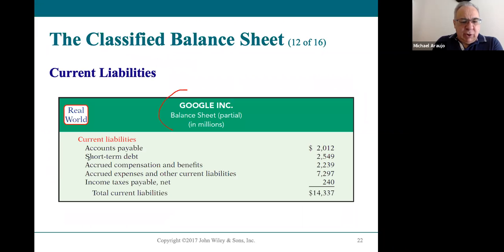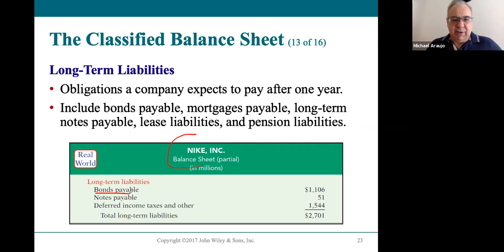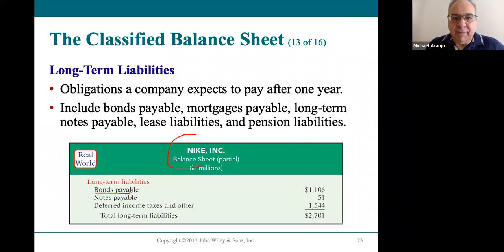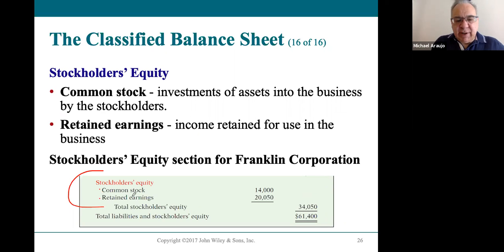The book also shows Google's current liabilities and Nike's long-term liabilities. There's another interesting account called bonds payable — a bond is a long-term loan from investors. The bond market is where investors go to lend money to corporations and to the government, both federal, state, and local. That's the investors' market for lenders. Stockholders' equity is simple as always: common stock listed first, retained earnings second, totaled, and done.